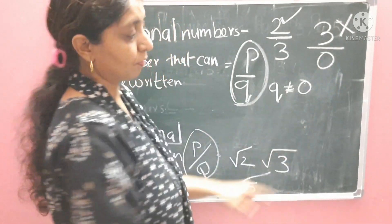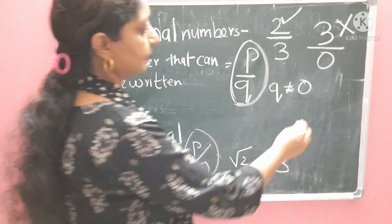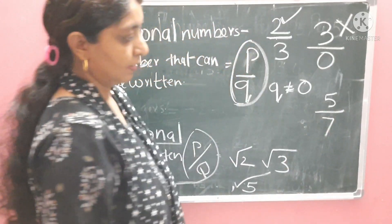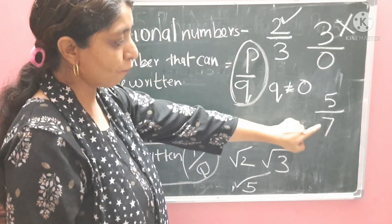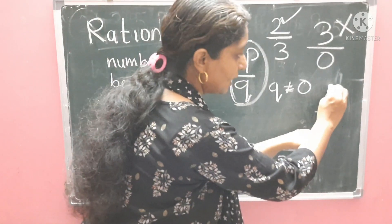3 upon 0, denominator is 0. So, this is not a rational number. 5 upon 7, in the form of fraction and this is not 0. So, this is a rational number.